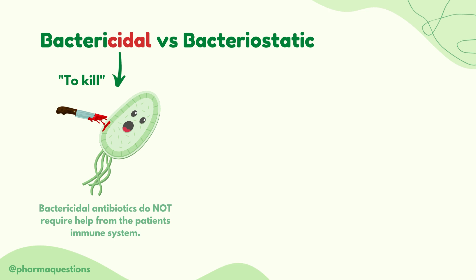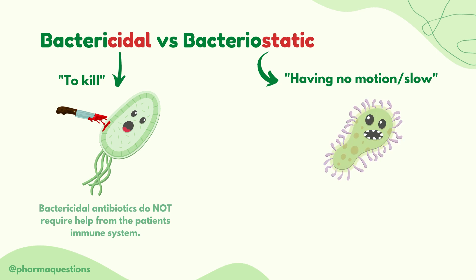Now let's take a look at bacteriostatic antibiotics. These type of antibiotics work by stopping the bacteria from multiplying — stopping it from growing. This can be remembered by the word 'static', which means to have no motion or to be slow. And because these antibiotics don't actually kill the bacteria, they just reduce the number, they require help from the patient's immune system.